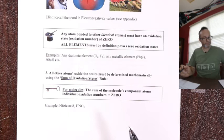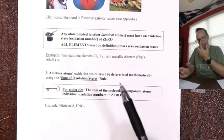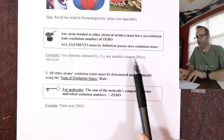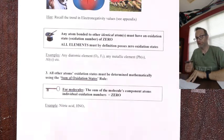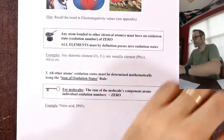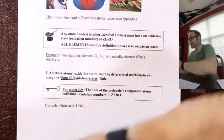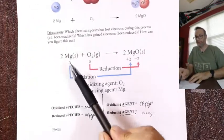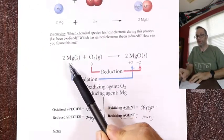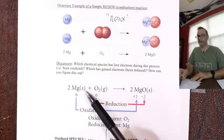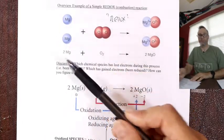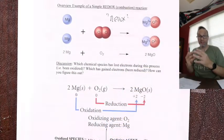Oxygen, fluorine, lead, aluminum — all elements, all oxidation state zero. Magnesium was assigned a zero oxidation state because it's just a chunk of metal — magnesium stuck to magnesium in that magnesium ribbon.